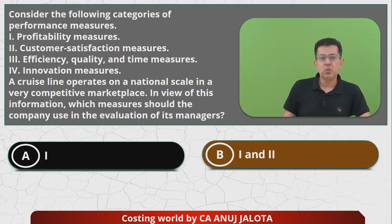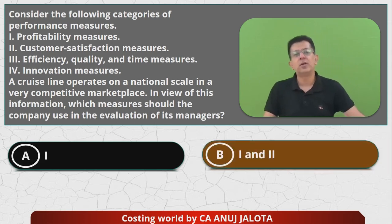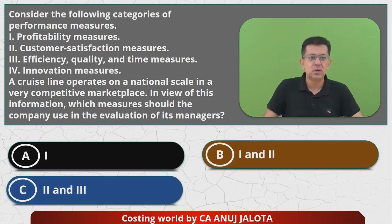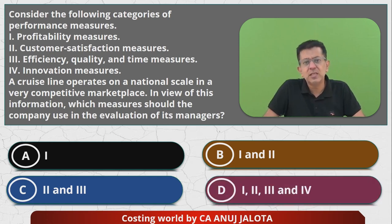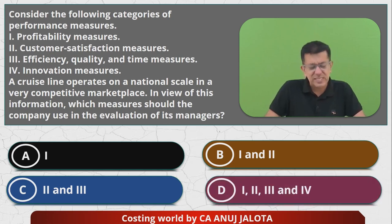The options are: one — profitability measures only; one and two — profitability and customer satisfaction; two and three — customer satisfaction, efficiency, quality and time; and lastly, one, two, three and four — all measures. This is an easy question, you can try commenting below.